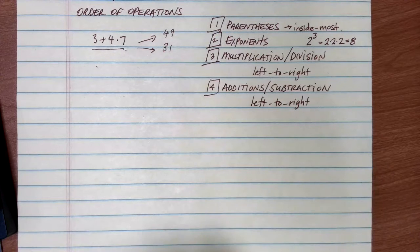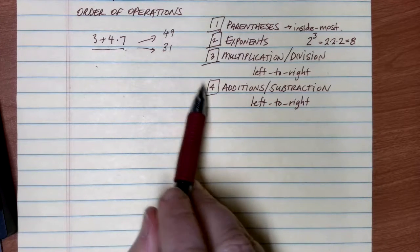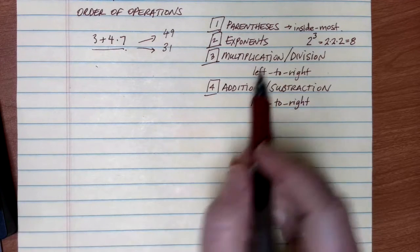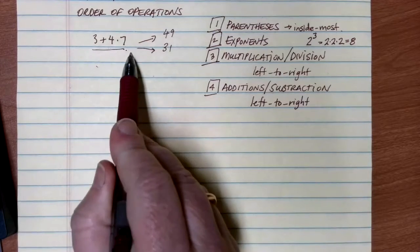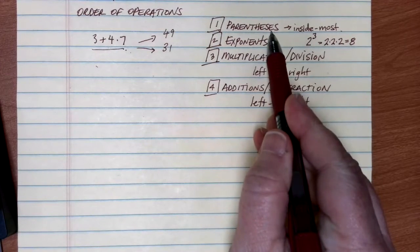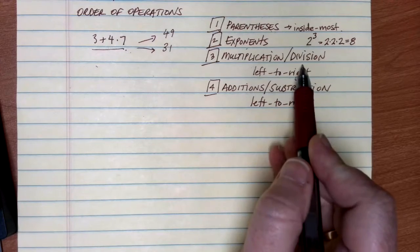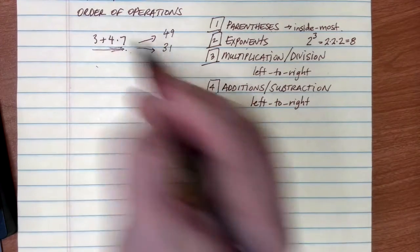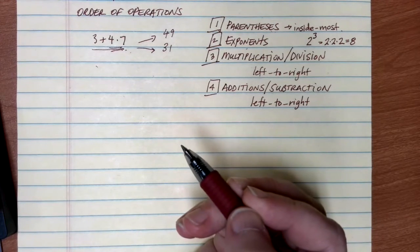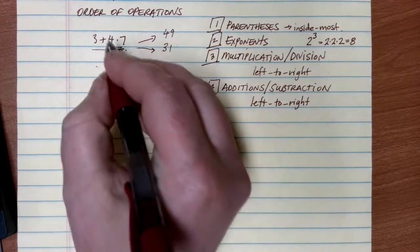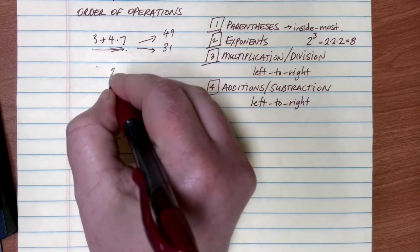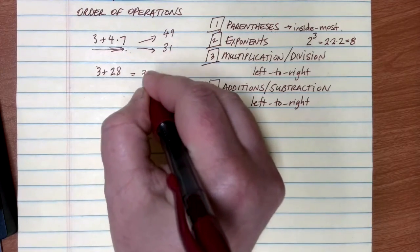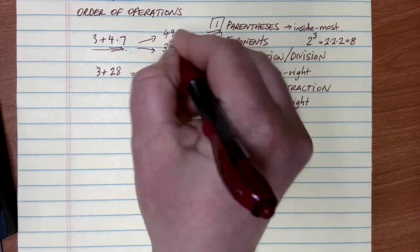So keeping this in mind as our order of operations, let's go through our checklist with our example and decide which student was correct. In 3 plus 4 times 7, there's no parentheses, no exponents, but there is a multiplication. We have 4 times 7, so the correct process is to do the multiplication first: 4 times 7 is 28. Then we do 3 plus 28 to get the correct final solution of 31.